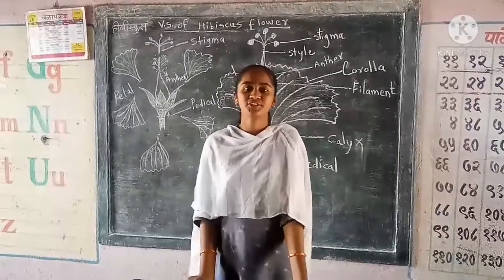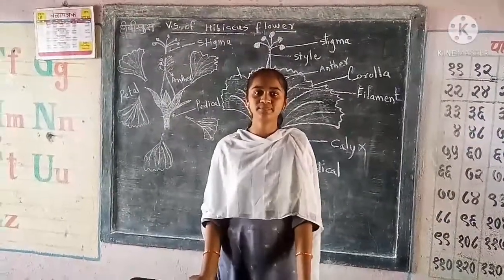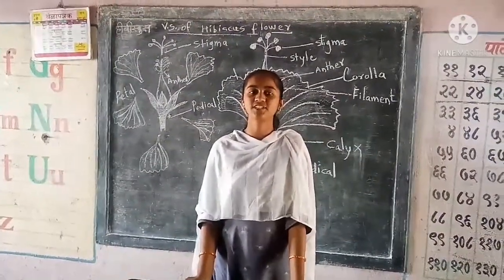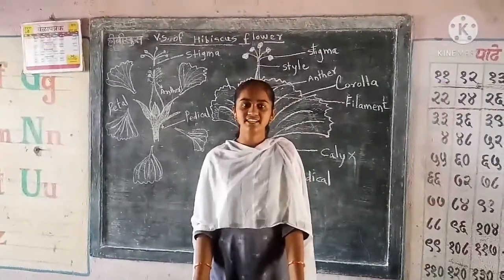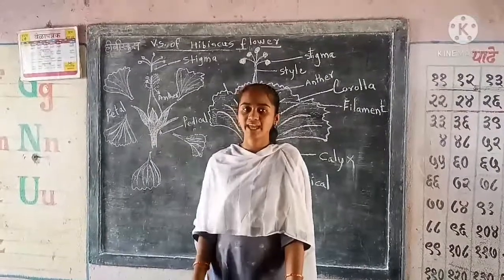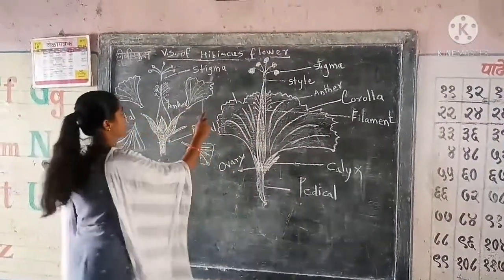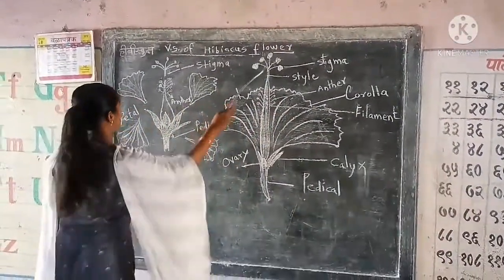Welcome. My name is Roshan Bhute. My school name is JPBS Primary School Barshi. I learn in Standard 7, Semi 2. My experiment name is Hibiscus flower.